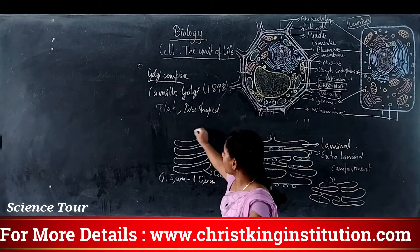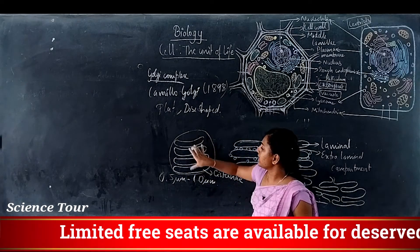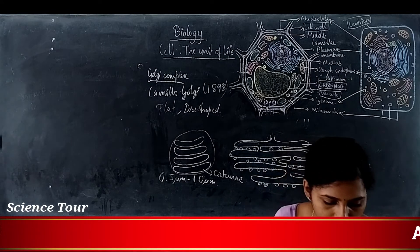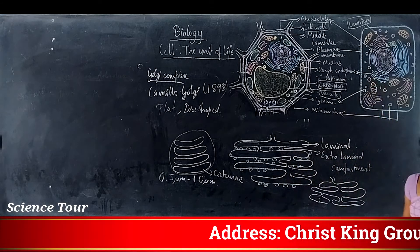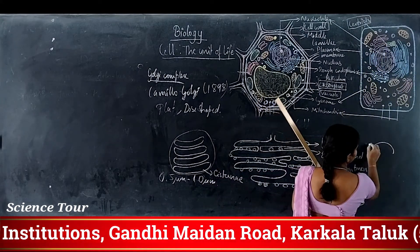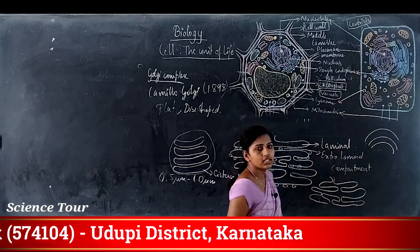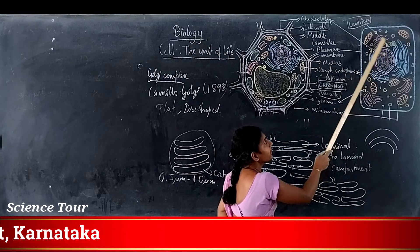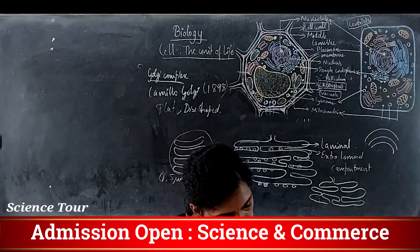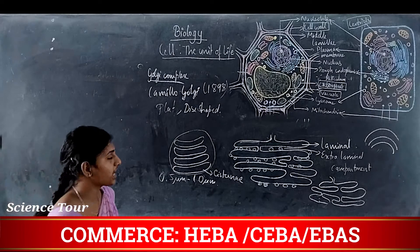The collective stack of cisternae is called the Golgi complex. They are usually concentrically arranged near the nucleus — like concentric circles near the nucleus. The cisternae are present in two different forms or faces.